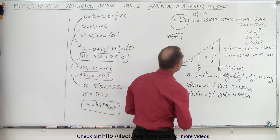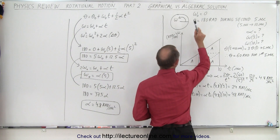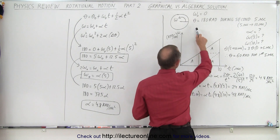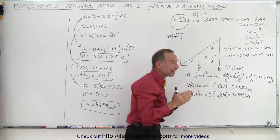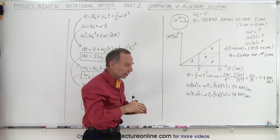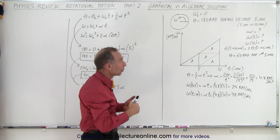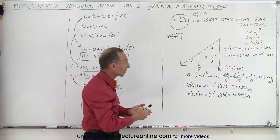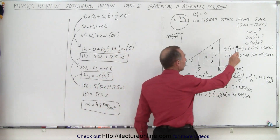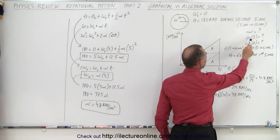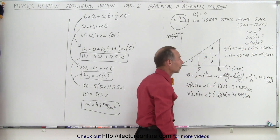We're told that the original omega — the starting omega — is equal to zero, so it starts from rest, and that it will have traveled 180 radians during the second five seconds. So they don't tell us how far it goes during the first five seconds, but during the second five seconds it covers 180 radians. We want to find the angular acceleration, the angular velocity after five seconds, and the angular velocity after ten seconds.